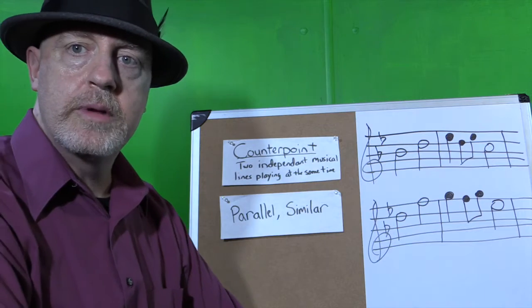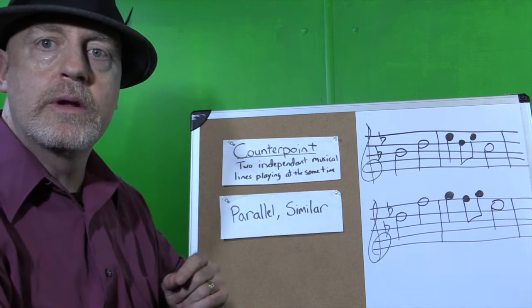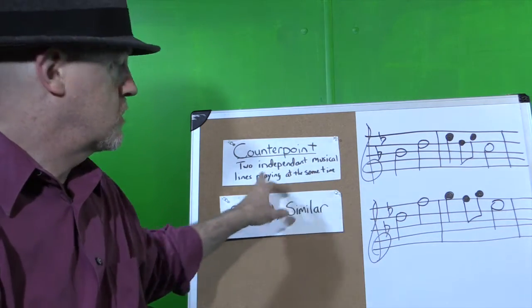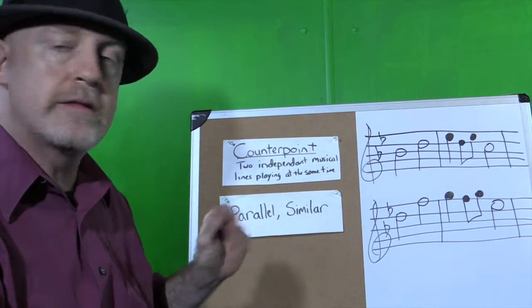Another type of harmony is called counterpoint. And counterpoint is when you have two independent musical lines playing at the same time.